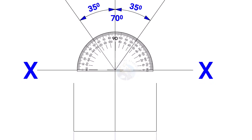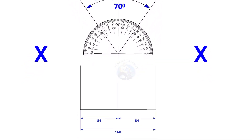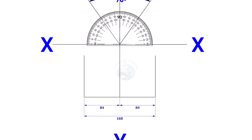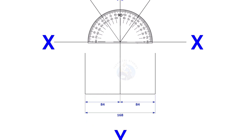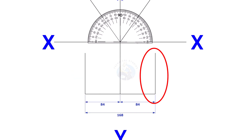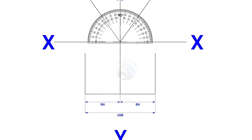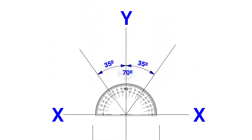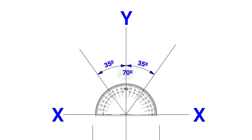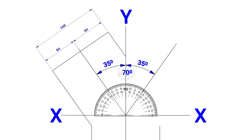Mark 84mm each on both sides of the YY axis — that is the outside diameter of the header. Draw perpendicular lines on these marks, as shown. Draw the branches also, as shown.